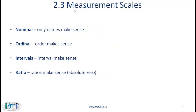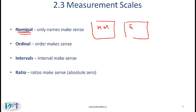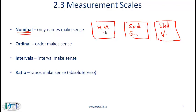Let us now talk about four different measurement scales. A nominal scale is one where we essentially only use names — only names make sense. For example, if we talk about different kinds of mutual funds, you might have a money market mutual fund, a stock fund focusing on growth stocks, or an equity fund focusing on value stocks. These three different funds are not better or worse relative to each other; essentially only the names make sense.